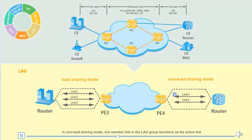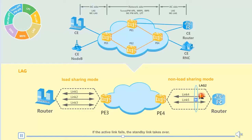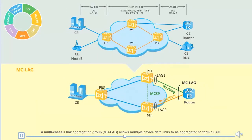In non-load sharing mode, one member link in the LAG group functions as the active link, and the other member link does not carry traffic and is in a standby state. If the active link fails, the standby link takes over. A multi-chassis link aggregation group (MC-LAG) allows multiple devices' data links to be aggregated to form a LAG. If a link fails, services are automatically switched to other links in the MC-LAG group, enhancing link reliability.